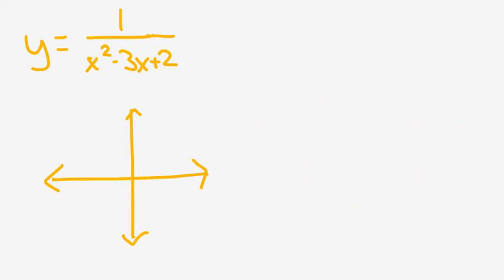And now one final example. Let's take the function 1 over x squared minus 3x plus 2 to find where and if there's any vertical asymptotes I need to make the denominator equal to 0.